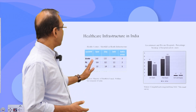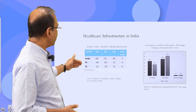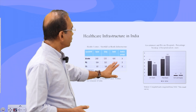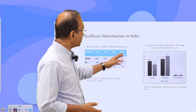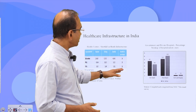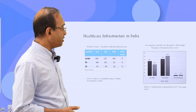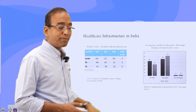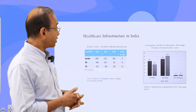Healthcare infrastructure also has a significant gap. We have sub-centres, PHAs, PHCs, and CHCs, and we find shortfalls in terms of percentages of 24%, 29%, and 38% — a significant gap in terms of infrastructure.